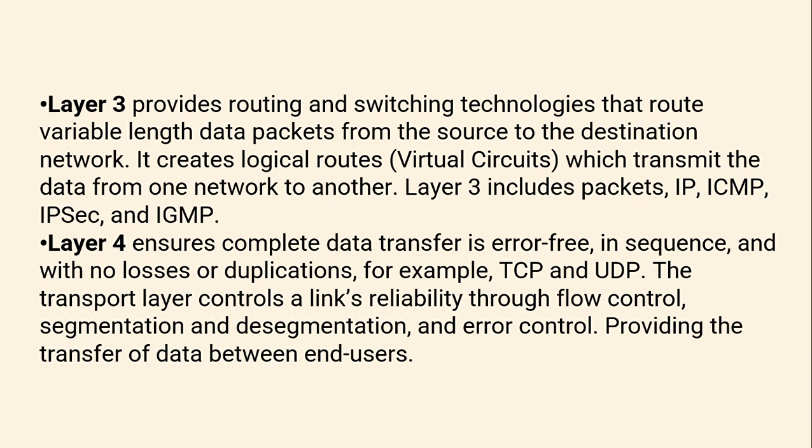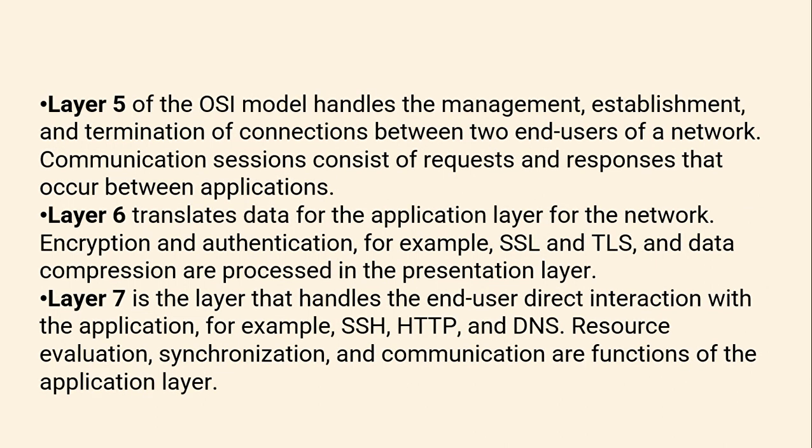Layer 4, the transport layer, ensures complete, error-free, in-sequence data transfer with no losses or duplication — for example, TCP and UDP. It controls link reliability through flow control, segmentation and desegmentation, and error control, providing data transfer between end users.